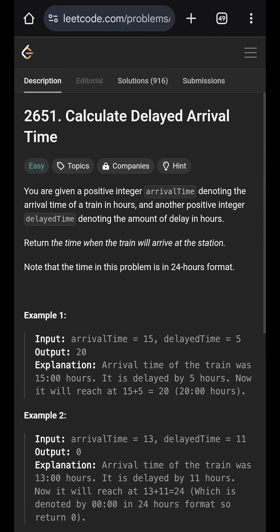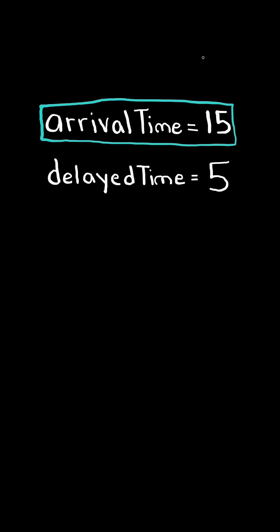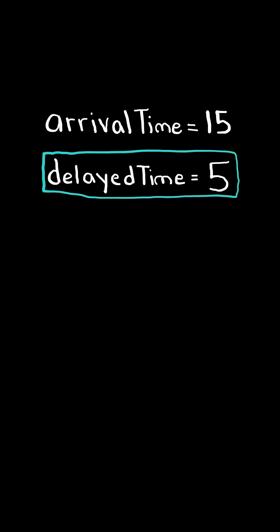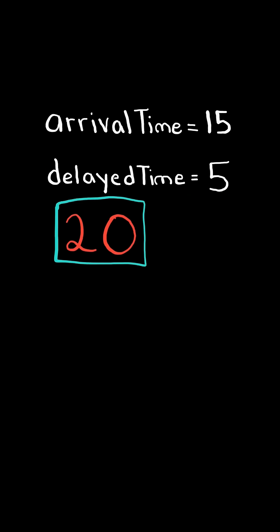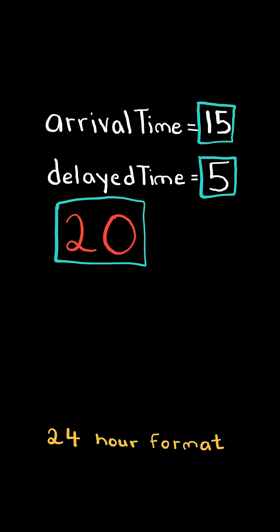Calculate delayed arrival time. Given the arrival time of a train and the delayed time of the train, calculate the expected time it will arrive. Note, all the timings are in a 24-hour format. If the train arrives at hour 15 and is delayed by 5, it will arrive at hour 20.